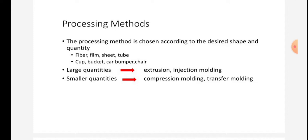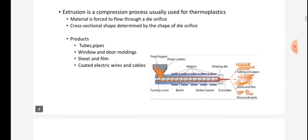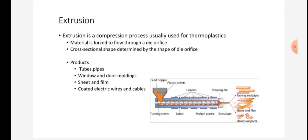Extrusion is a compression process usually used for thermoplastics. Material is forced to flow through the die orifice. Cross-sectional shape is determined by the shape of the die orifice. Products include tubes, pipes, window and door moldings, sheet and film, and coated electric wires and cables.